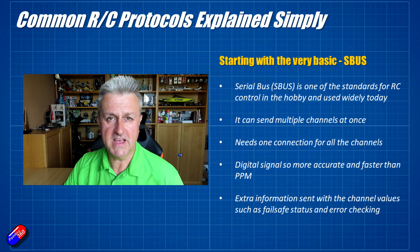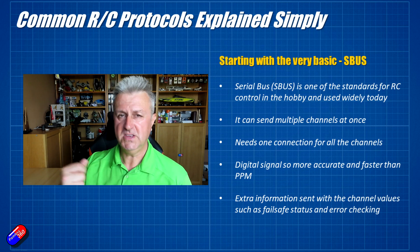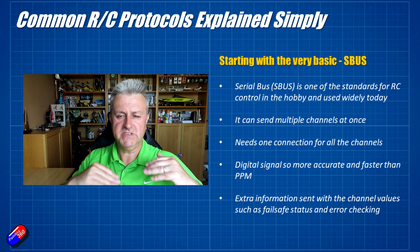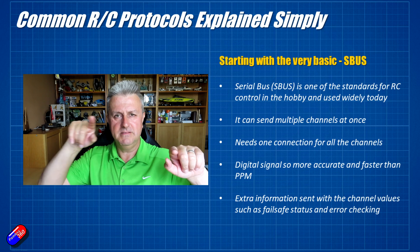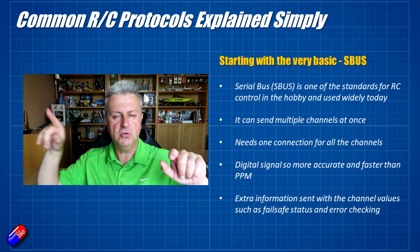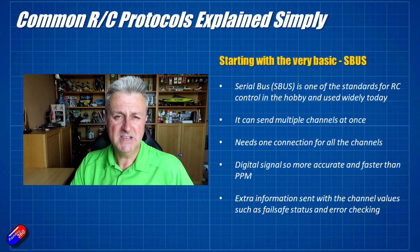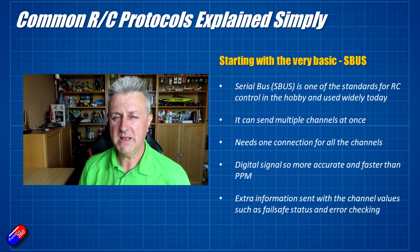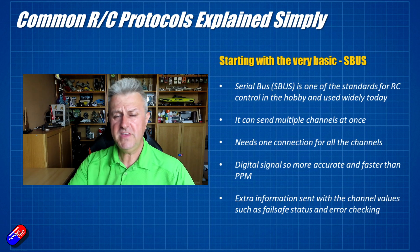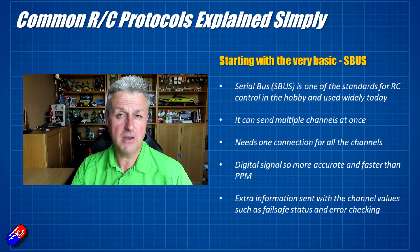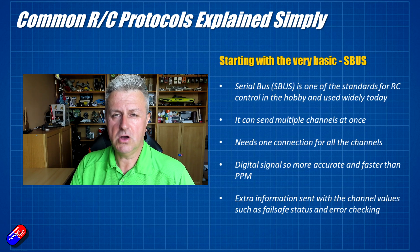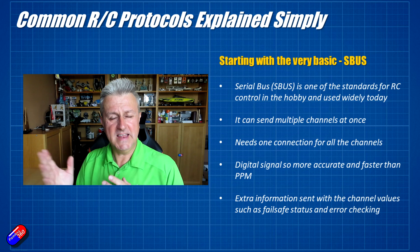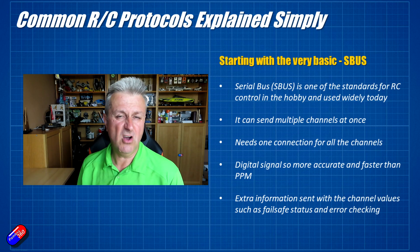There are a couple of massive advantages to that. First, you can send the information an awful lot quicker, because with PPM if all channels had a really high value you had to wait to send those long pulses. With SBUS it takes roughly the same amount of time to send the signal no matter what the channel values are. The other thing is that we no longer need to calibrate, because using a digital protocol the discrete value is being sent for all channels and you can just read it off at the other end.